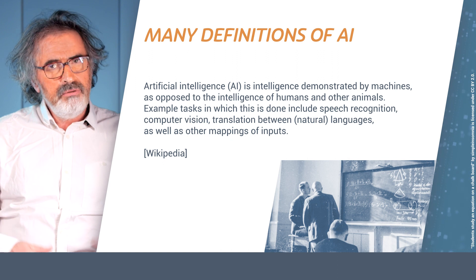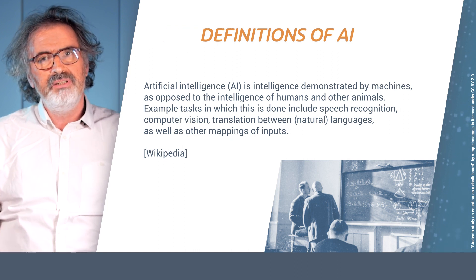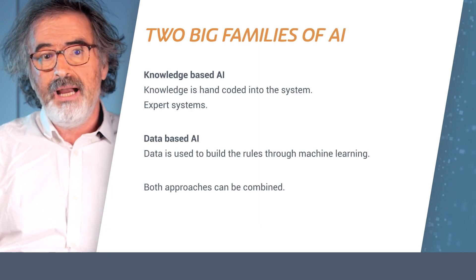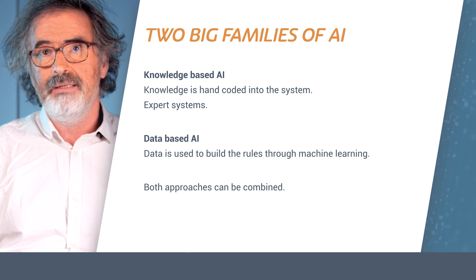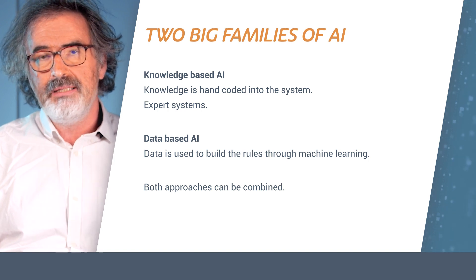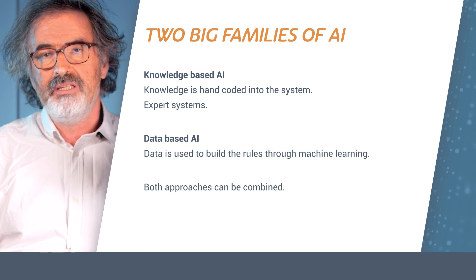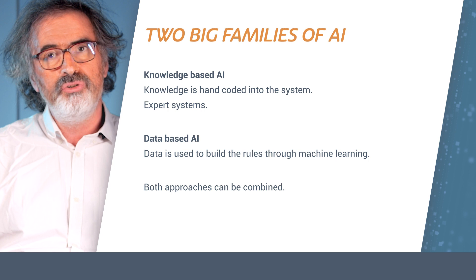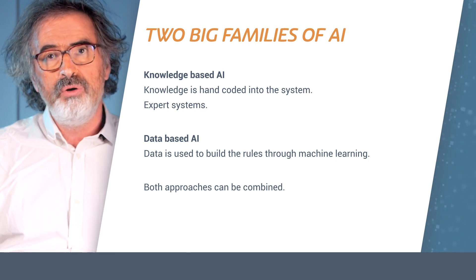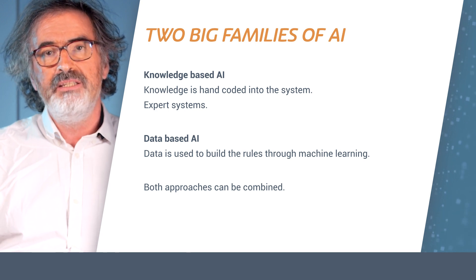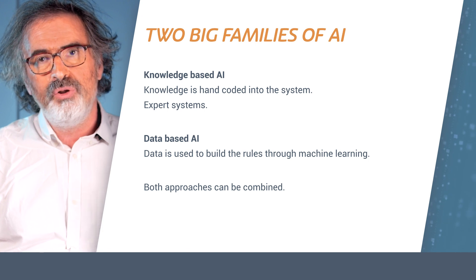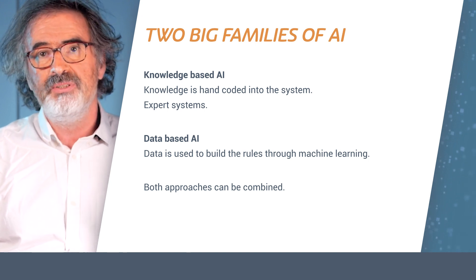You can find really exciting definitions out there. There are two big families of AI: knowledge-based AI and data-based AI. Knowledge-based AI is the AI based on the knowledge which is shared typically by humans. Programmers and computer scientists are going to encode this knowledge into programs, and this is what we use and interrogate when we use AI. This is also very often known as expert systems.